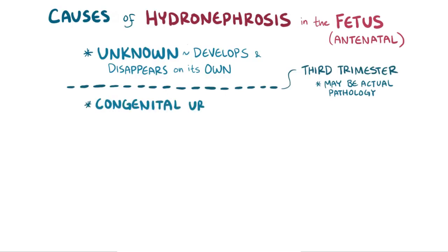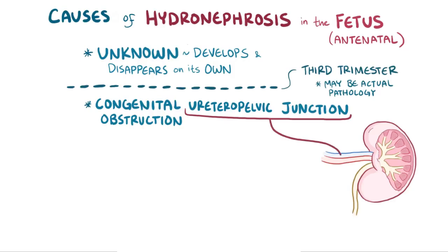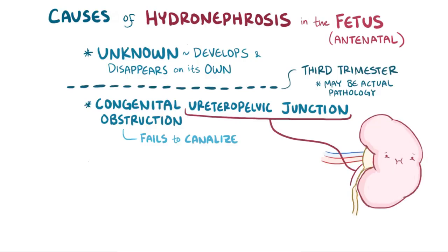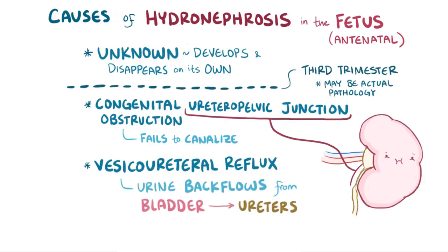For example, there's congenital uretero-pelvic junction obstruction, which is where the uretero-pelvic junction — connecting the ureter to the kidney — fails to canalize during development, obstructing the flow of urine. Another cause is vesico-ureteral reflux, which is where urine is allowed to backflow from the bladder into the ureters and eventually the kidneys.